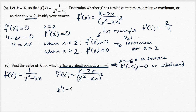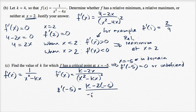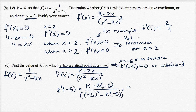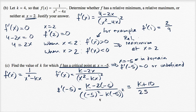f'(-5) in terms of k is going to be equal to k minus two times negative five, all of that over negative five squared minus k times negative five, and then we square all of this. So this is going to be equal to k plus ten, over 25 plus five k, whole quantity squared.